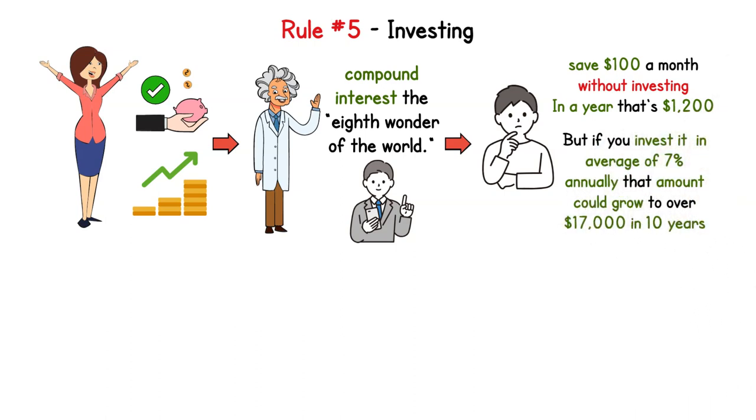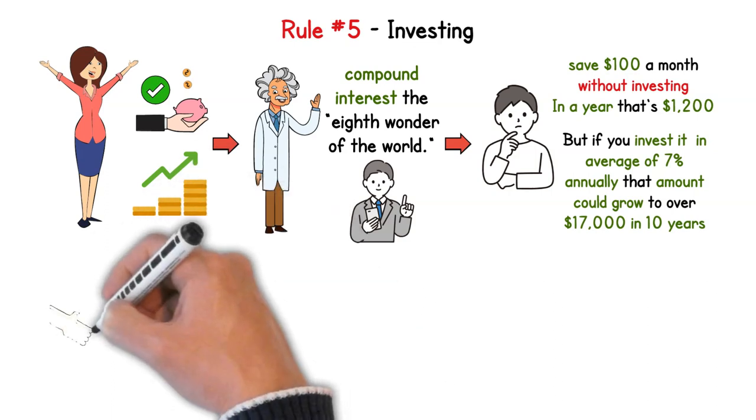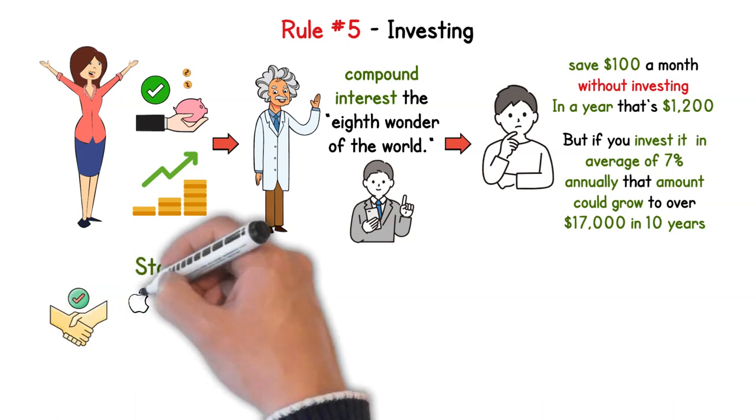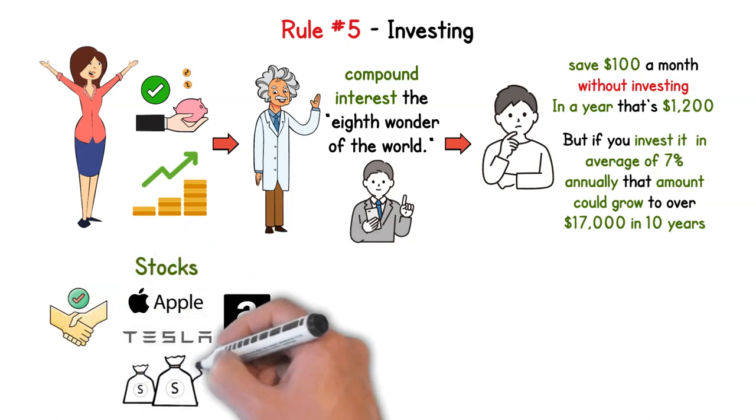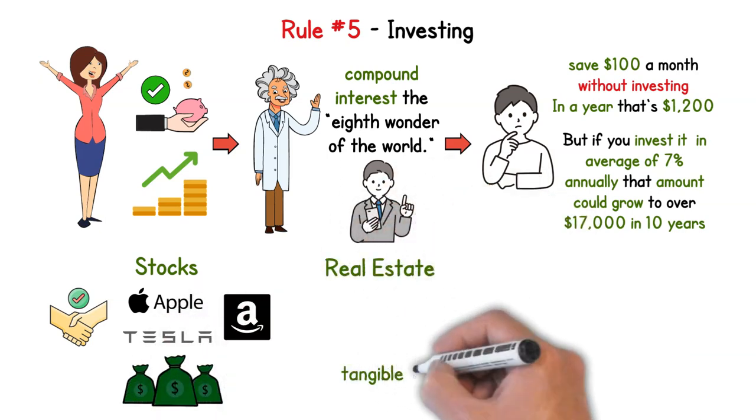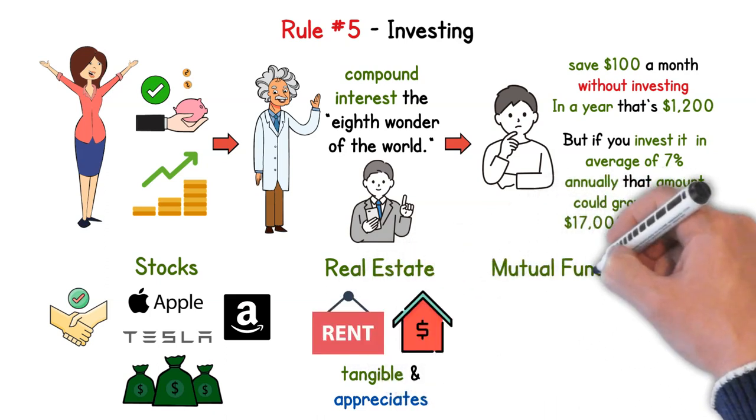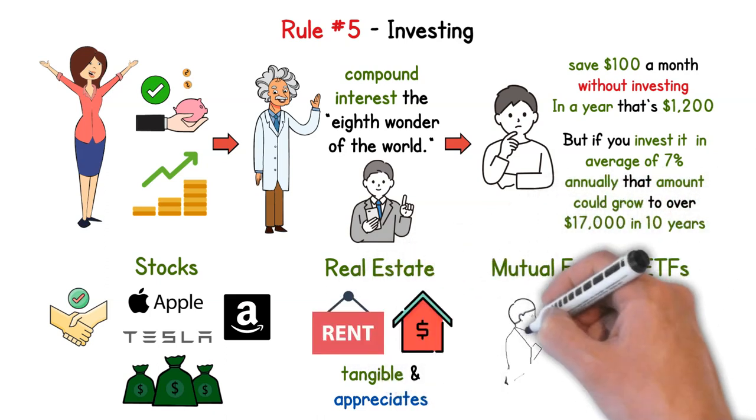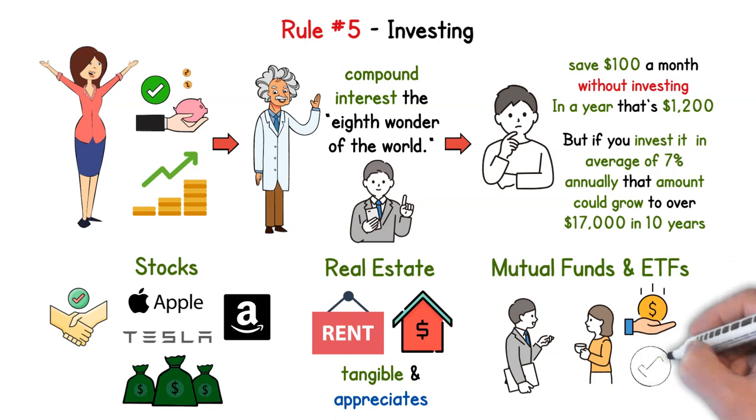Now what are the investment avenues we're talking about? Stocks: buy a share of a company and grow with its success. Apple, Tesla, Amazon - these giants were once startups and early investors hit the jackpot. Real estate: it's tangible, often appreciates, and can offer consistent rental income. Mutual funds and ETFs: don't have the time or expertise for direct stock investments? Mutual funds and ETFs can be a great place to start.